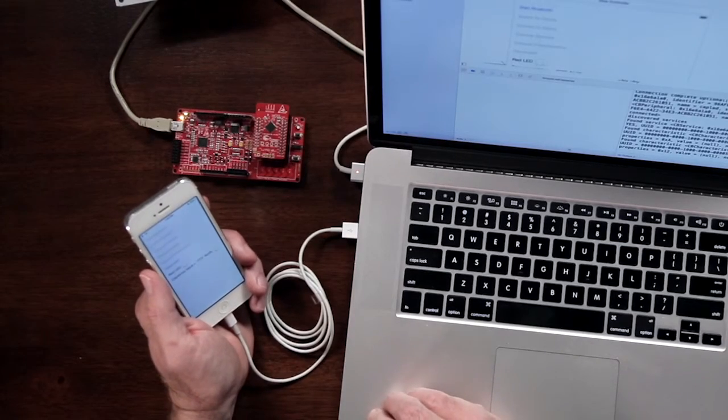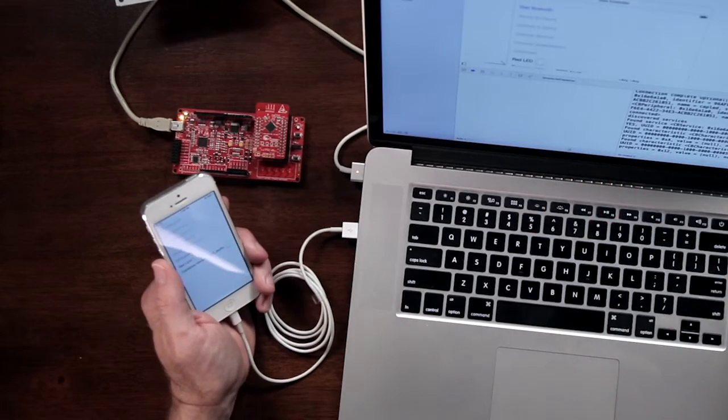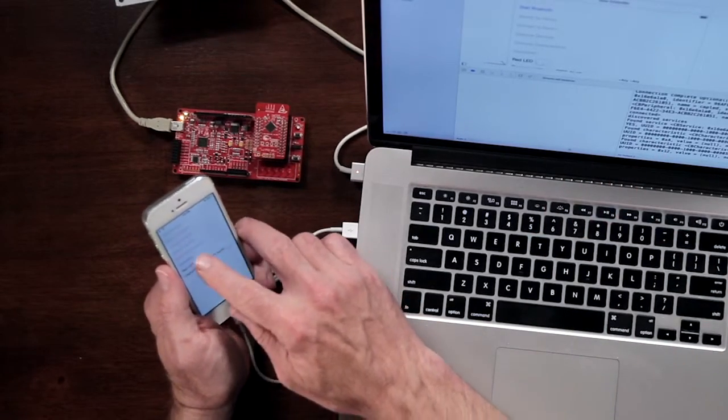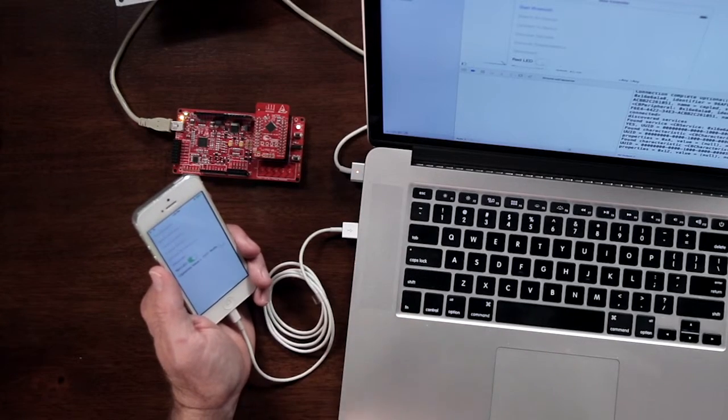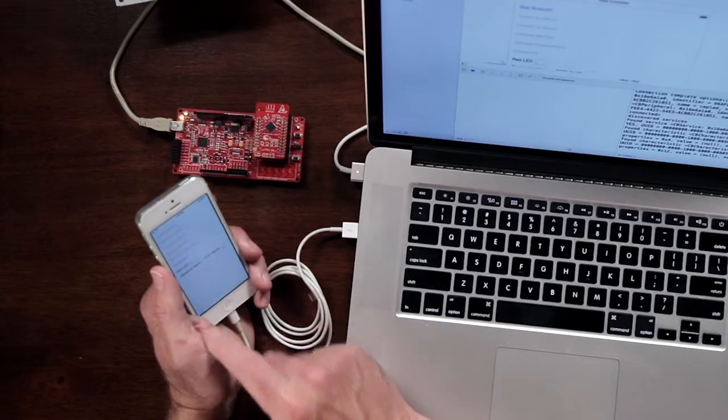The first command that I showed you with CY Smart is the Write the LED characteristic. When I flip the switch, the red LED turns on and off and on and off.